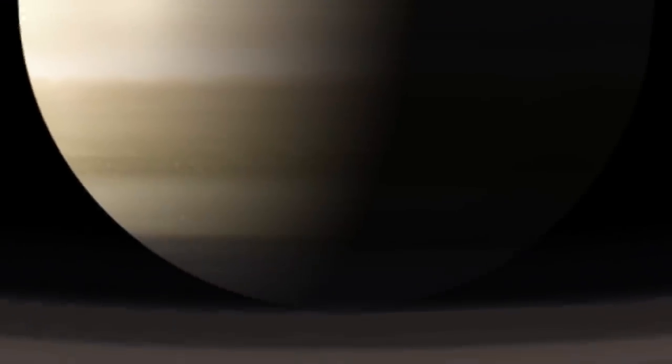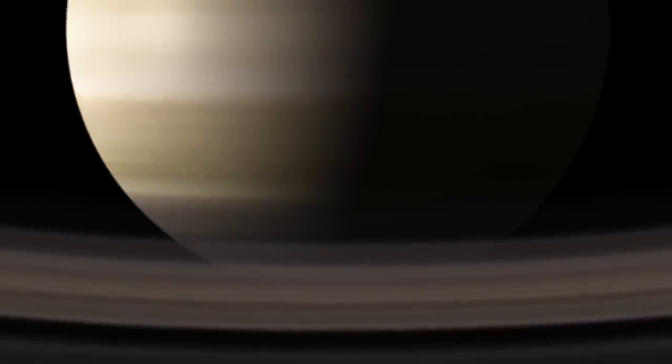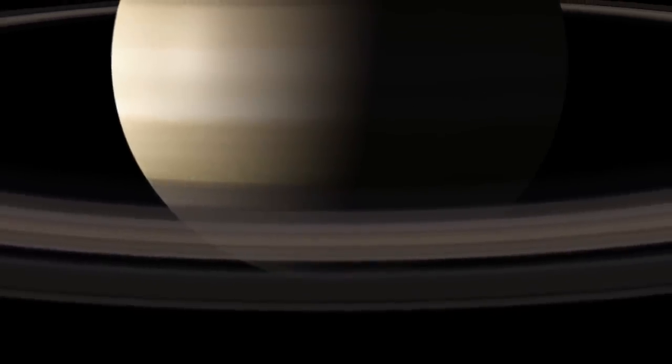We finally see the C ring, which is the innermost of the three main rings. Composed of many bright plates, narrow gaps, and some very narrow rings, this ring is nicknamed the Pancake Ring because of its semi-transparent appearance.